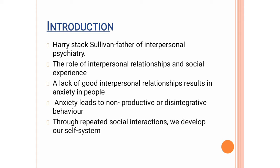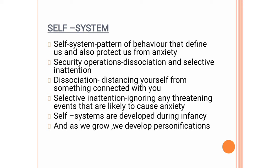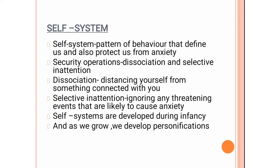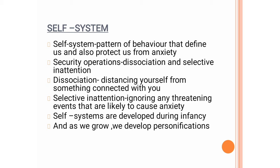Sullivan states that through repeated social interaction we develop what he called a self-system, a concept closely related to the concept of anxiety. The self-system is a consistent pattern of behavior that defines us and also protects us from anxiety. According to Sullivan, this is our mechanism to protect us from anxiety; in a simplistic way, it can be referred to as our self-image.